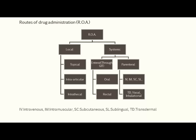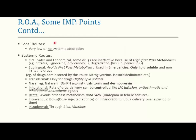For the local route, the drug has very low or no systemic absorption — this is the key point. For systemic routes, oral is the safest and most economical, but several drugs are ineffective due to high first-pass metabolism. Examples are nitrates, lignocaine, and propranolol. Some drugs like insulin (proteins) or penicillin G have instability in the gastric region and suffer degradation, making them ineffective via the oral route.